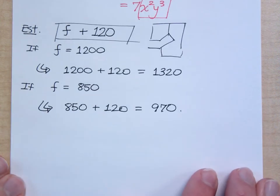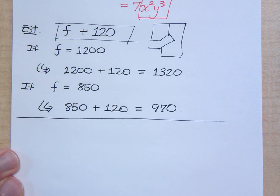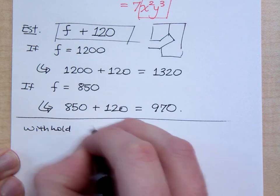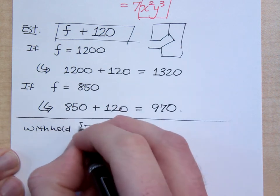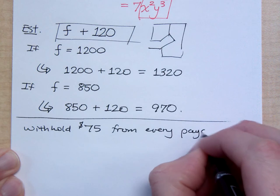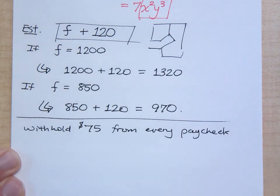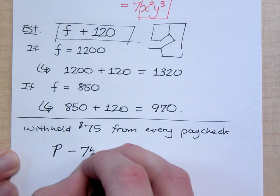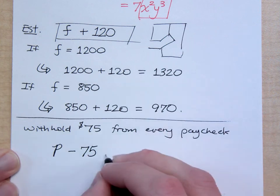Now suppose we could change things up here to give a different example. Suppose I say that you want to withhold $75 from every paycheck. Like maybe this is something that you're pulling out to put into savings. So you want to know what would your actual paycheck be? Well if P is my amount of my paycheck and I'm taking 75 away from it that's going to tell me how much money I have.